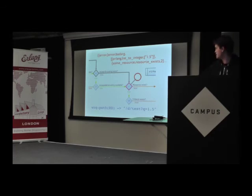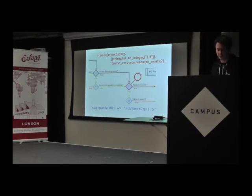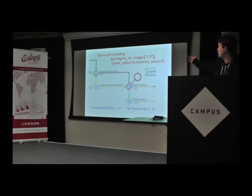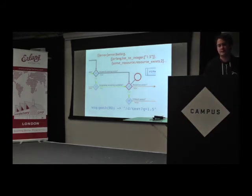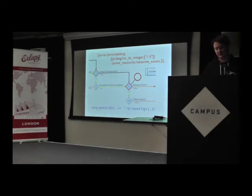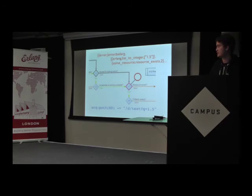For example, I'm making a request to D slash test with q equals 1.5. If I read through the state in the debugger, I can see that I called erlang:list_to_integer and I'm trying to cast a list to an integer, but we all know that's a float. So that's why we got a 500. Now I know exactly what I need to do to fix this.